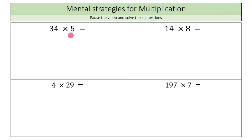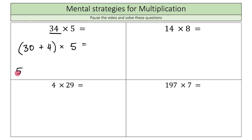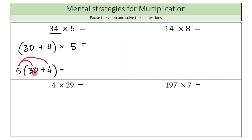The first one is 34 times 5. I'll break 34 into 30 plus 4, then times by 5. Using our commutative law, this is also 5 times (30 plus 4). Now distributing the 5: 5 times 30 — since 5 times 3 is 15, adding the zero gives 150 — plus 5 times 4 is 20. So 150 plus 20 equals 170.